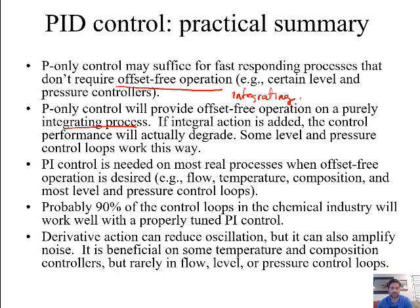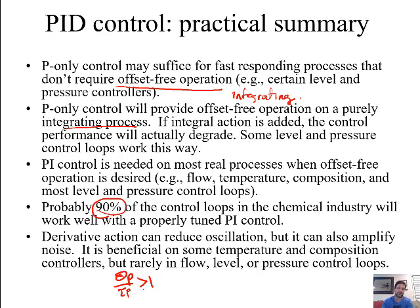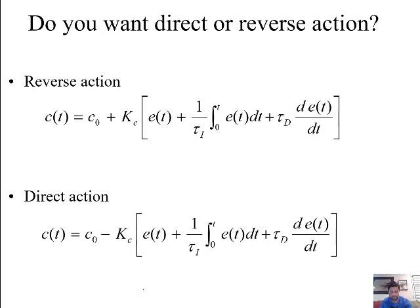PI control is used for most processes requiring offset-free operation — flow, temperature, composition loops, as well as level and pressure loops that are self-regulating (non-integrating processes), accounting for typically about 90% of loops. For derivative action, only use it if θP/τP is greater than 1. Between 0.5 and 1, analyze the process. For values less than 0.5, stick with PI.